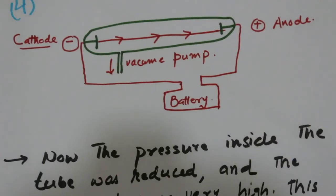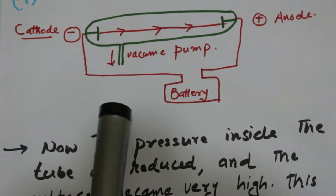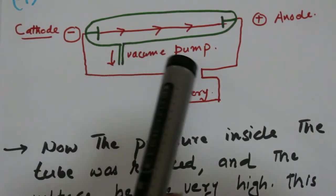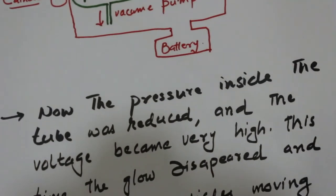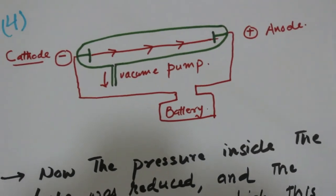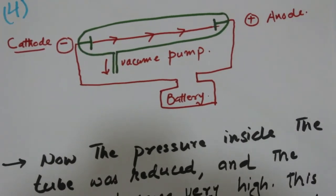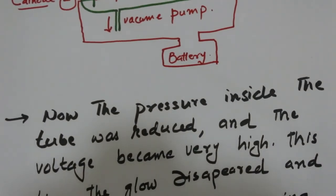When the pressure inside the tube is further reduced with the vacuum pump and the voltage across the electrodes is further increased, a ray of particles is produced which moves from the cathode towards the anode. This ray of particles was called cathode rays, and this work was all done by William Crookes.